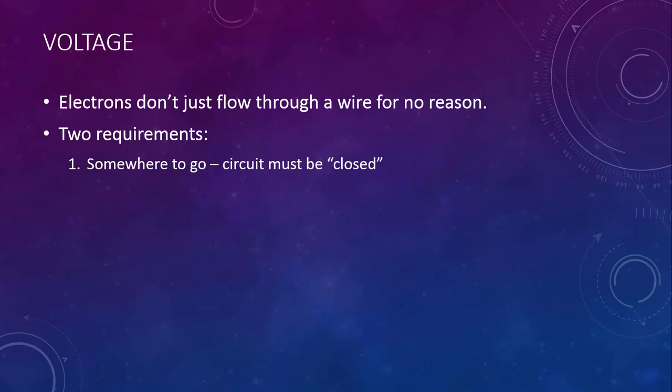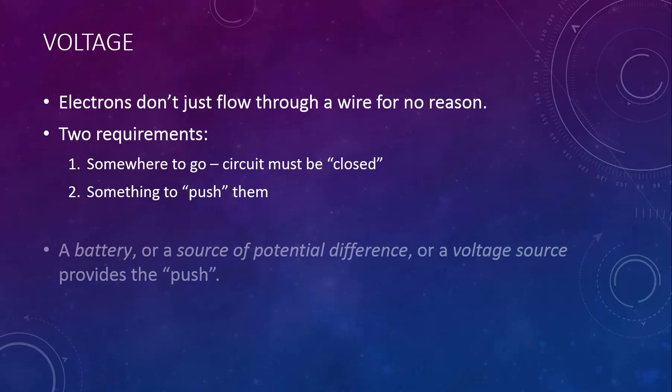First, they have to have somewhere to go. The circuit has to be closed. There also has to be something to push them through the circuit. A battery, or a source of potential difference, or a voltage source, all the same thing, provides that push.